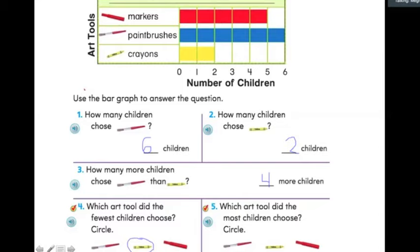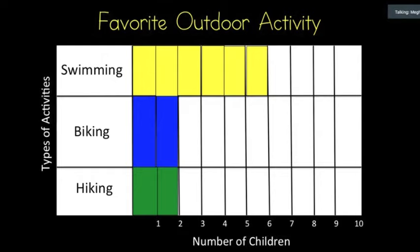The last question asks, which art tool did the most children choose? We're going to circle it again. So, again, I look at my bar graph and I see that paint brushes has the longest bar or that it has six. And I know that six is greater than five and it's greater than two.